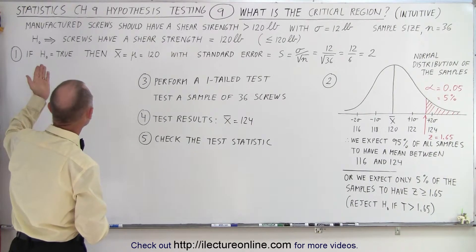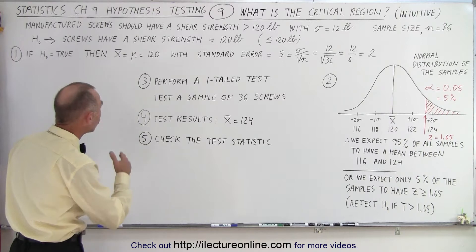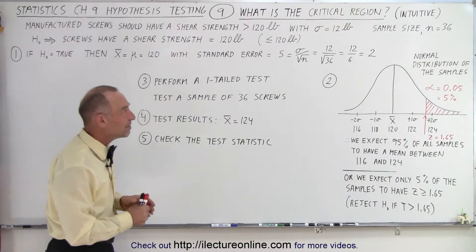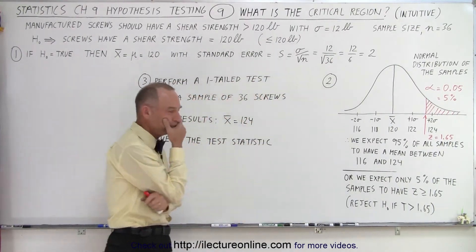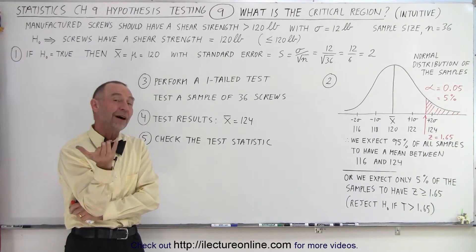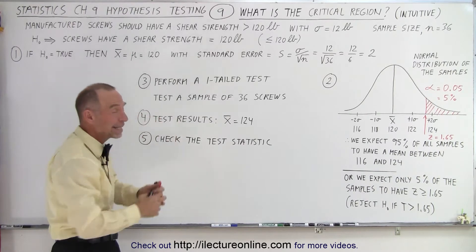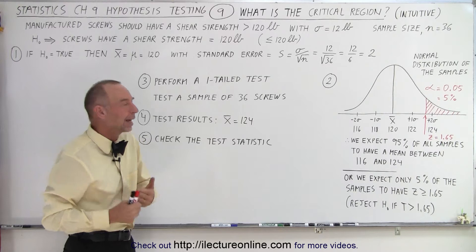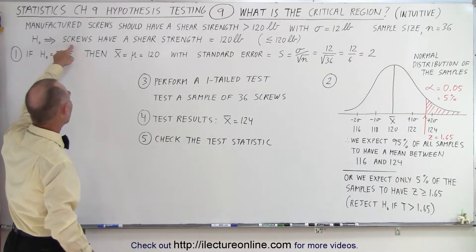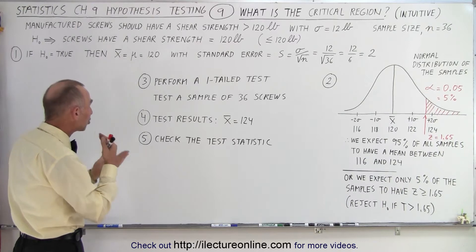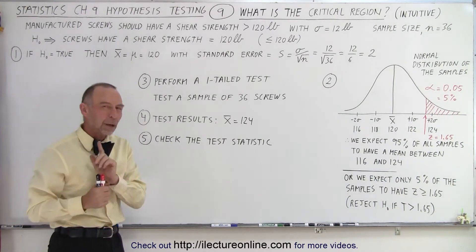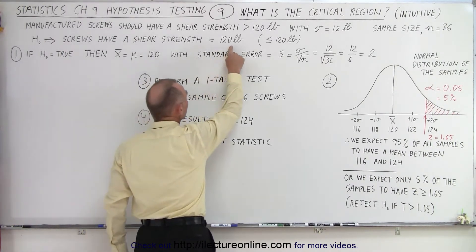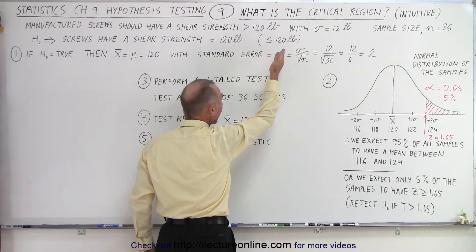Let's say that we manufactured screws and those manufactured screws should have a shear strength of more than 120 pounds with a standard deviation of 12 pounds. So how are we going to verify that our manufactured screws actually do meet that criteria? We're going to do a test and we're going to start off by setting a null hypothesis. The null hypothesis is defined as the screws that we manufacture have a shear strength of 120 pounds, which means 120 pounds or less.